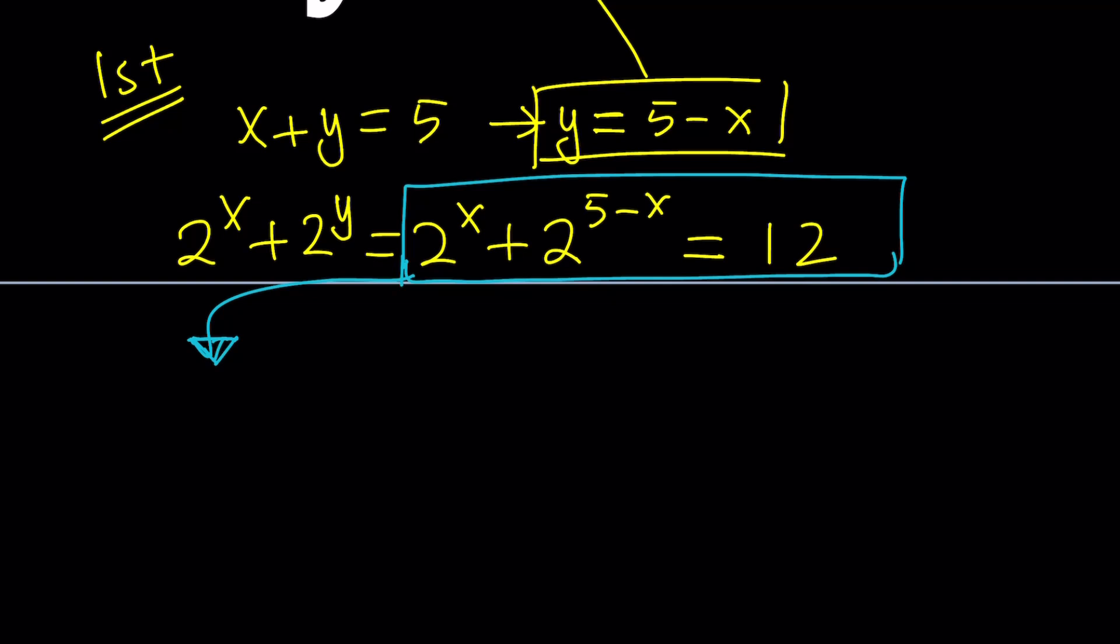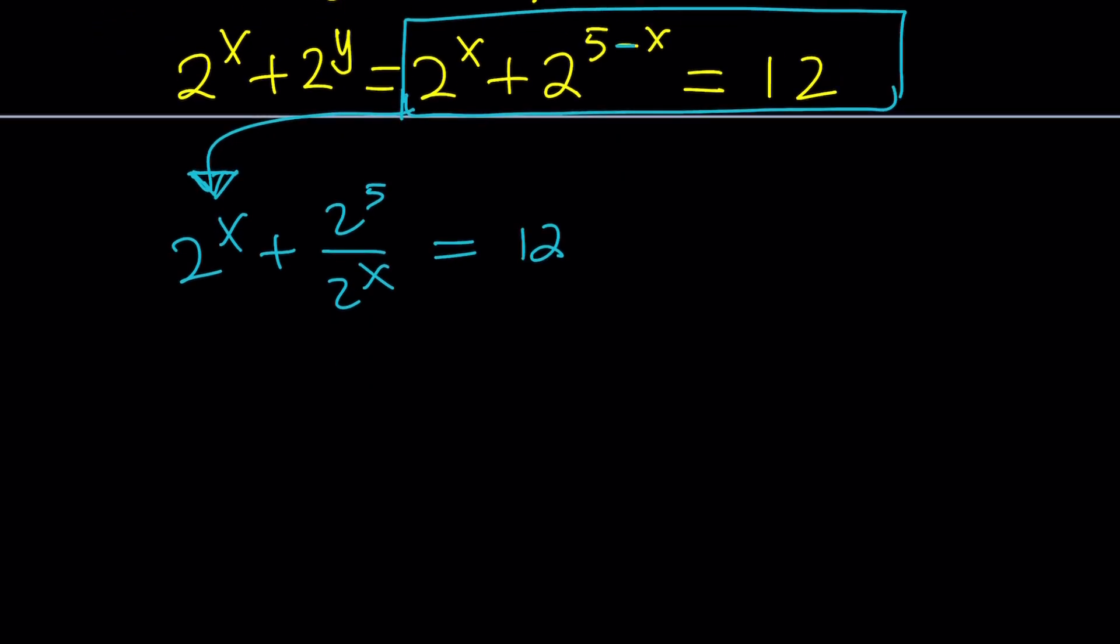So by using properties of exponents, because we have a difference of two exponents, we can kind of write it as 2 to the power 5 divided by 2 to the power x. Because when you divide powers with the same base, you subtract the exponents. And that is equal to 32 divided by 2 to the power x. Let me rewrite this with 32.